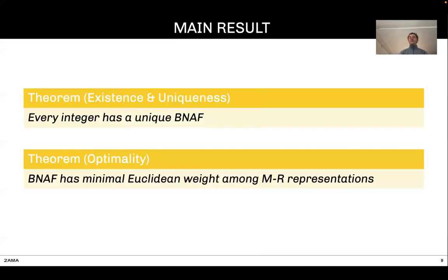What we show in the paper, and this is really the main result, is that every integer has a BNAF—we have an algorithm and that BNAF is unique. More importantly, we prove that the BNAF has the minimal Euclidean weight among all modified radix presentation, meaning all representation using signed digits. You cannot do better.